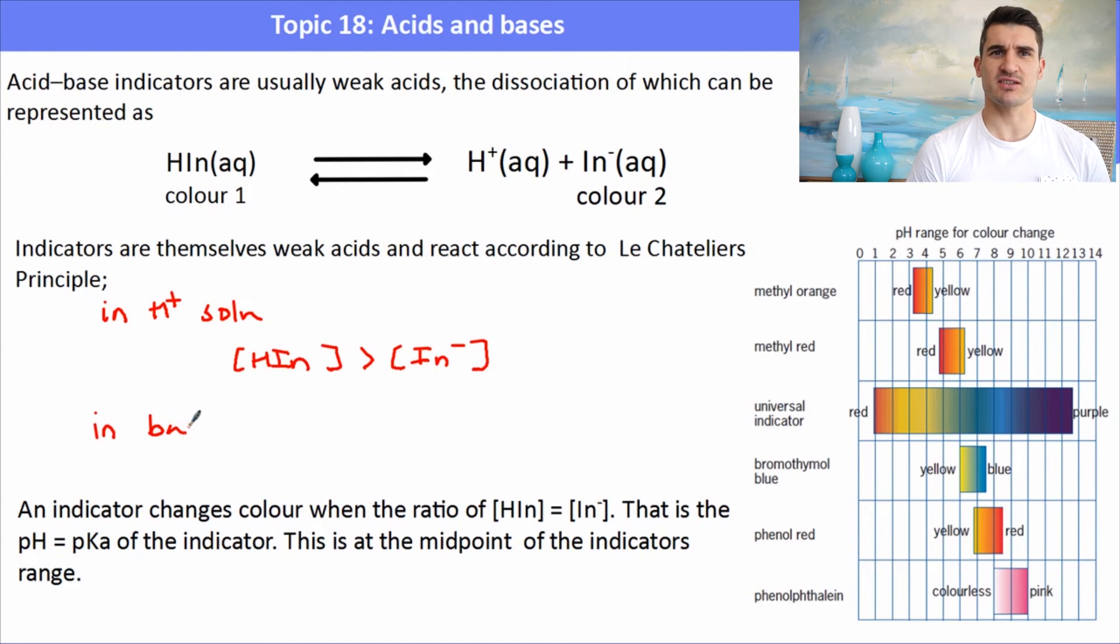In a basic solution, if we add in OH minus, that's going to shift it to the right. So our concentration of In minus would be greater than our concentration of HIn. Essentially, an indicator just tells you the color, which corresponds to the ratio between HIn, which is color one, and In minus, which is color two. The midpoint of the indicator is where the HIn equals In minus, and that's the point at which we say the color changes.